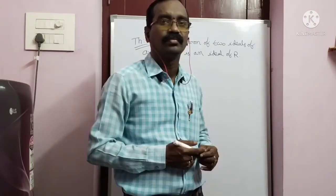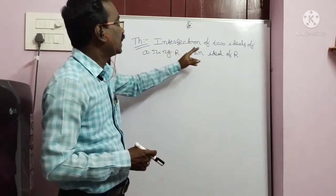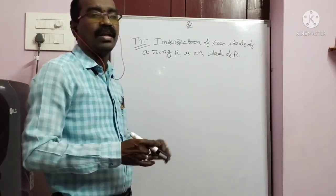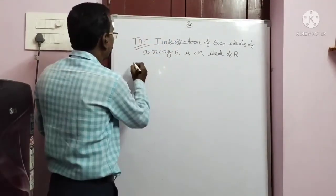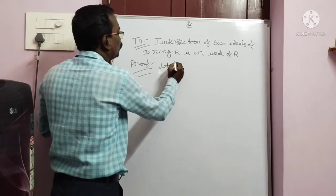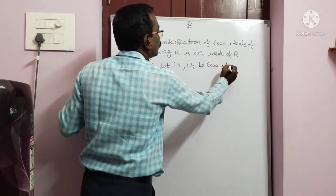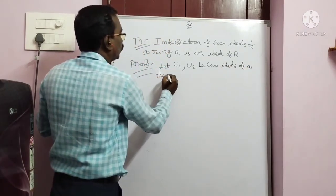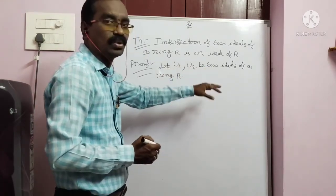One more theorem. The intersection of two ideals of a ring R is an ideal of R. The intersection of two ideals is an ideal. Proof: Let U1, U2 be two ideals of ring R. We will prove that U1 intersection U2 is an ideal.